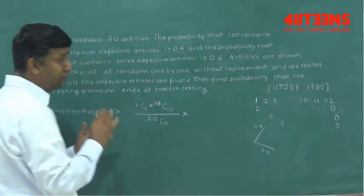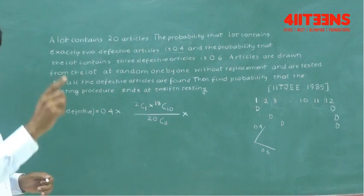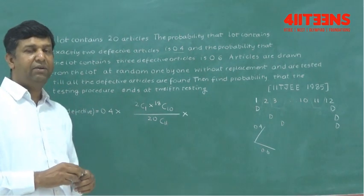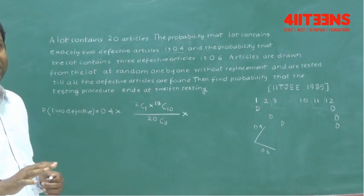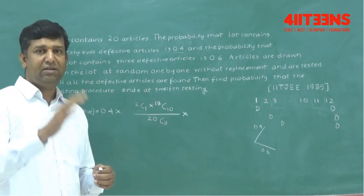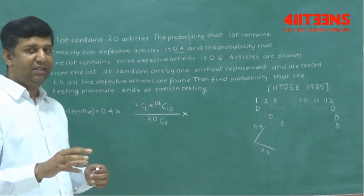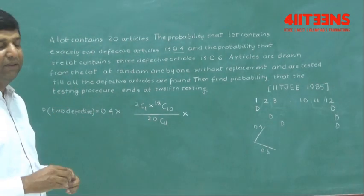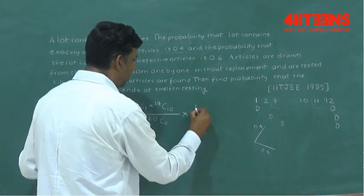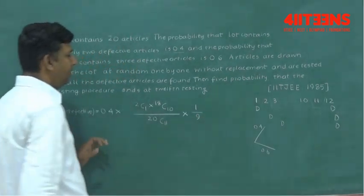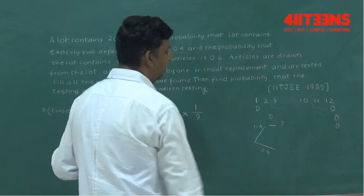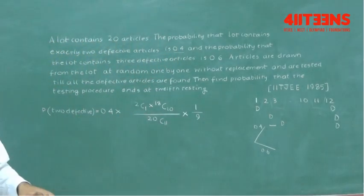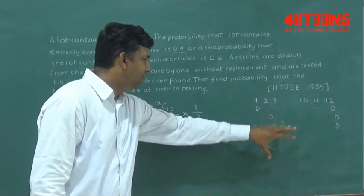And now we're talking about the 12th draw. You have one defective remaining and the total number remaining are 9. So from 12 to 20 there are 9 total articles, and in that one of them is defective, so you write 1 by 9. This is the way you learned in school books. This way to do it, and here you mention this probability.